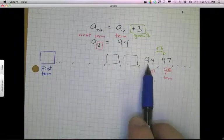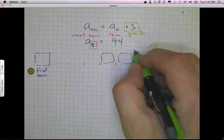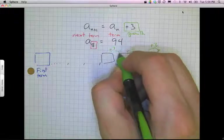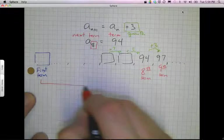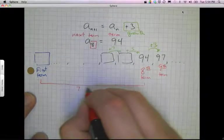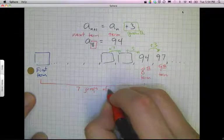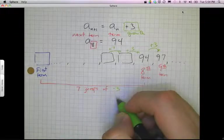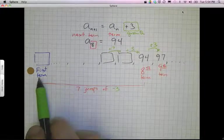Well, if this is my 8th term, you can imagine that I've done this adding 3 a couple of times. In fact, a total of 7 more times. So I've jumped a total of 7 times. So between my first term and my 8th term, I have 7 jumps of minus 3. And if I can just figure out how far backwards I need to go, I can figure out what my first term is.